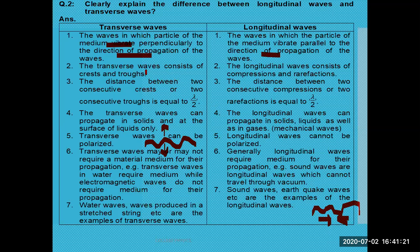Transverse waves consist of crests and troughs. The trough is the point on the wave where the vibration of the particle is minimum — below the mean position. The crest is the position of the particle above the mean position where the vibration is at maximum.